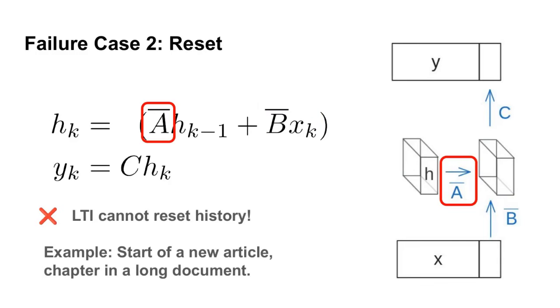There's a similar problem with the A-matrix. Imagine we're processing a web page that has many different articles. When we get to the title of the next article, we'd like to forget basically everything we've seen before. This article is just a different piece of text to model. It's irrelevant what the first article said.